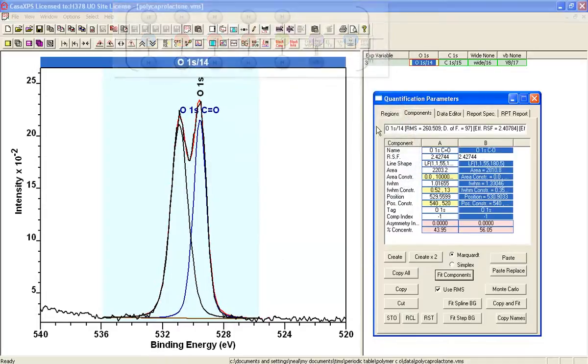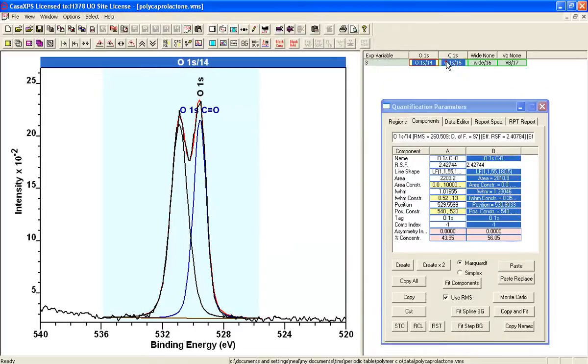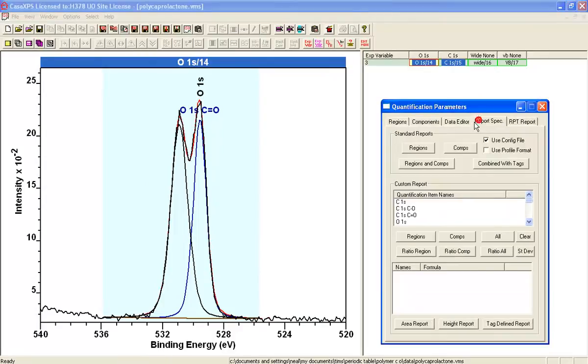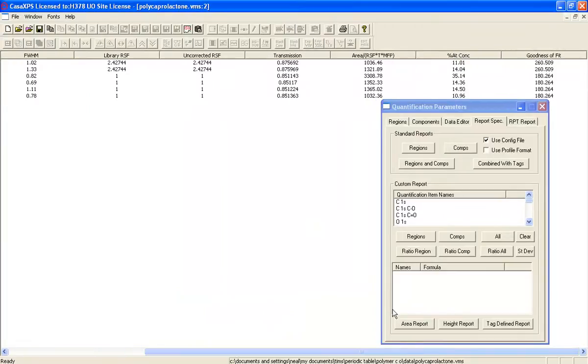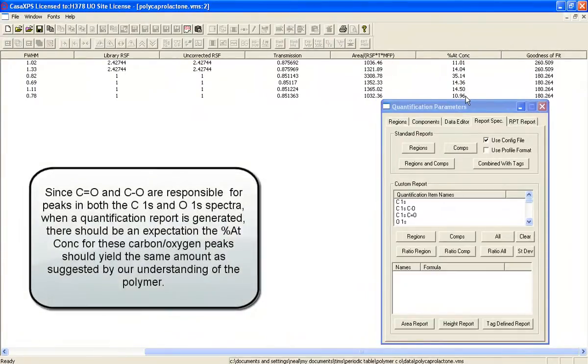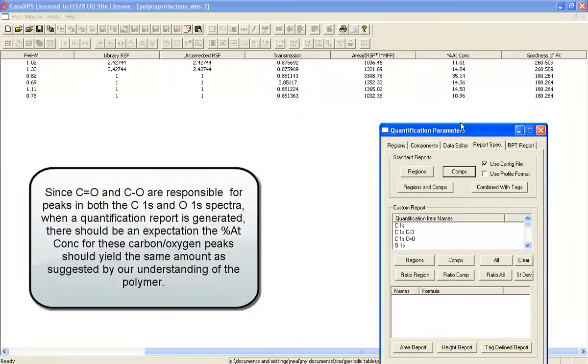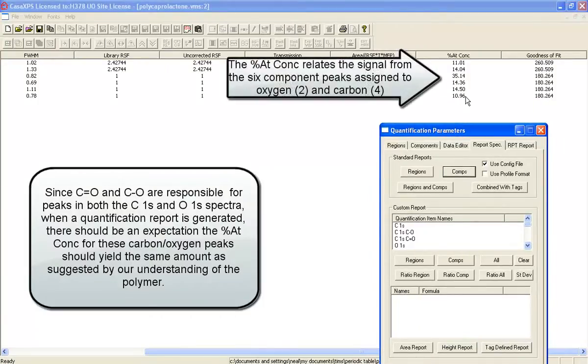And what we would like to do is display both of these as a table. If we go to report spec we can press the components and it will give us a table that gives us the atomic concentration. This suggests that you should have a relationship here between different components and it's actually turned out reasonably well.